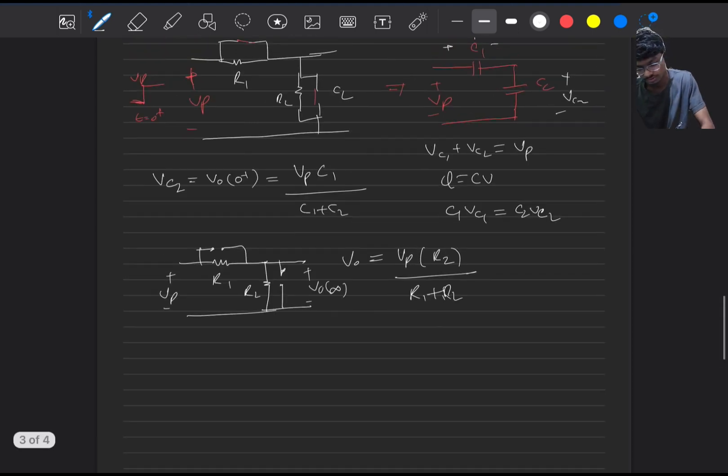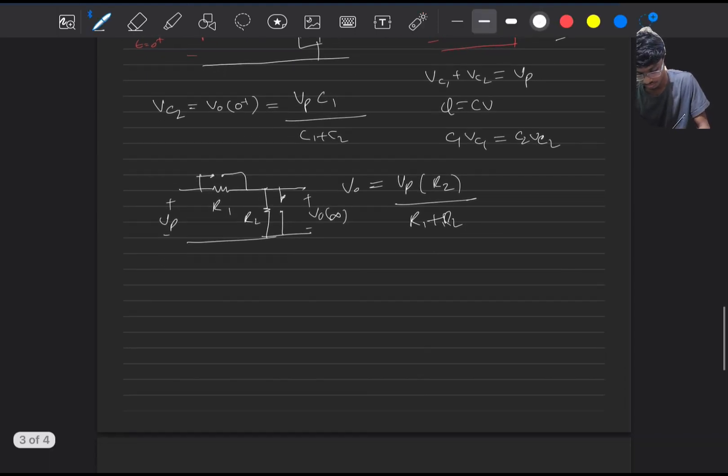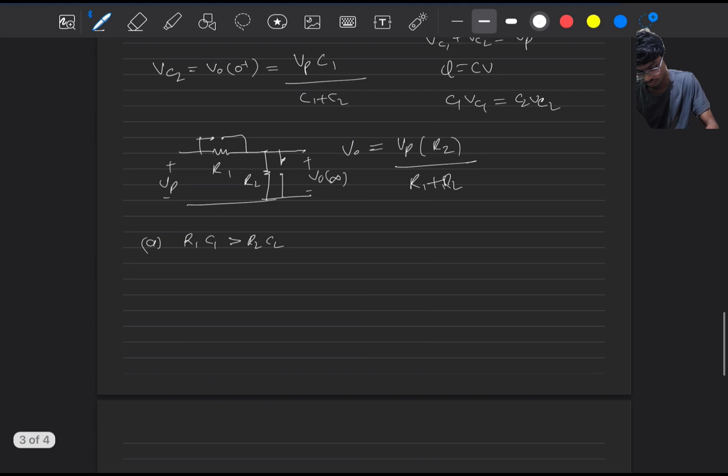Now as you can see, the initial and final voltages are dependent on the elements present in the circuit. So it may so happen that it may charge or discharge depending whether the initial voltage or final voltage is more. So if we take three cases, one case will be R1 C1 is greater than R2 C2. For this case, V0 of 0 plus is more than V0 of infinity. So in this case it will discharge.